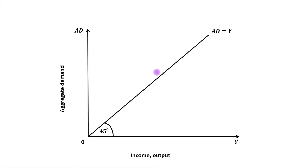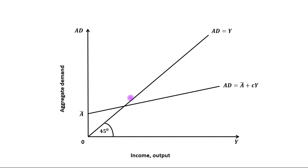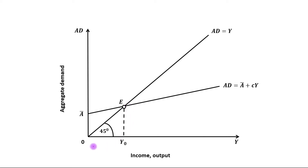This is our 45-degree line and this is the initial AD curve. Equilibrium will be achieved at the intersection point of the 45-degree line and the AD curve, that is point E. The initial equilibrium level of output is OY₀.